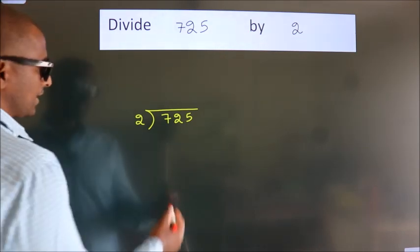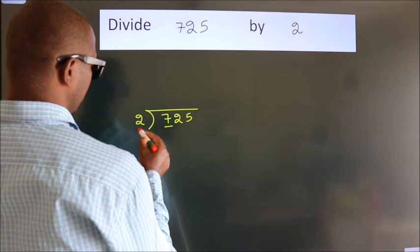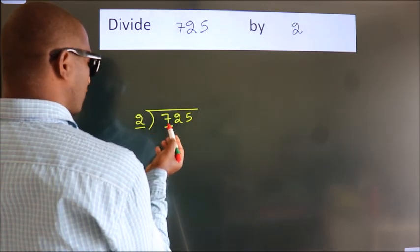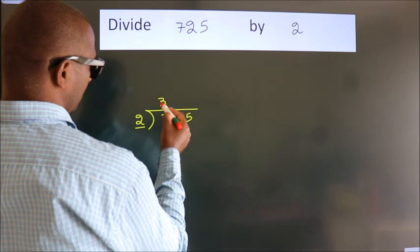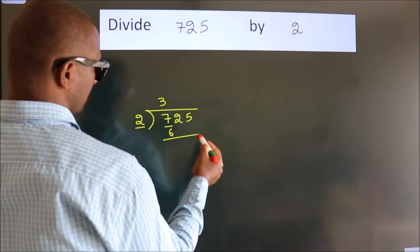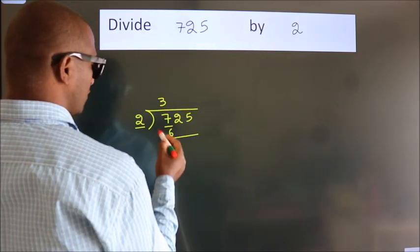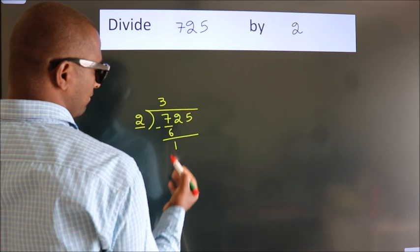Next, here we have 7, here 2. A number close to 7 in 2 table is 2 3s 6. Now we should subtract, we get 1.